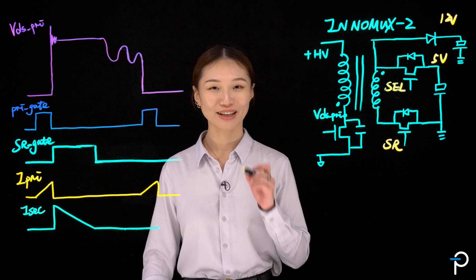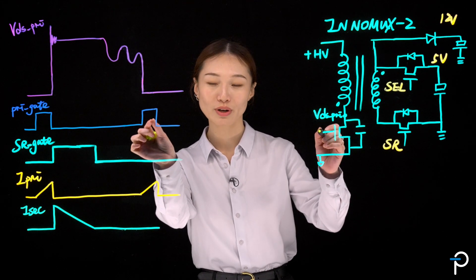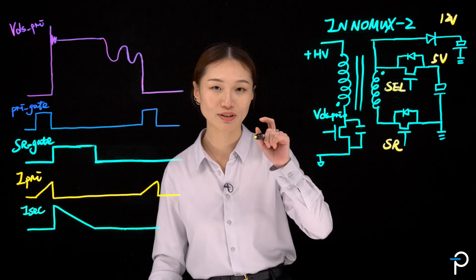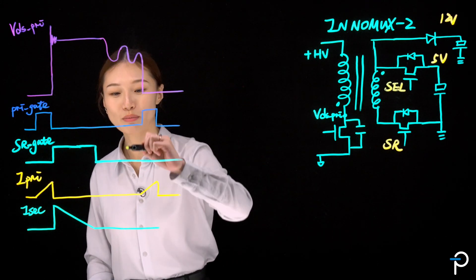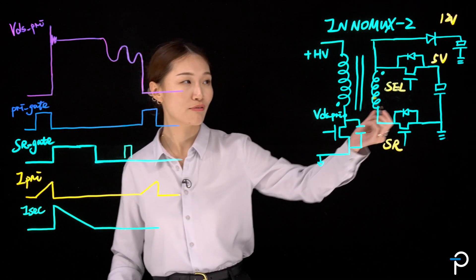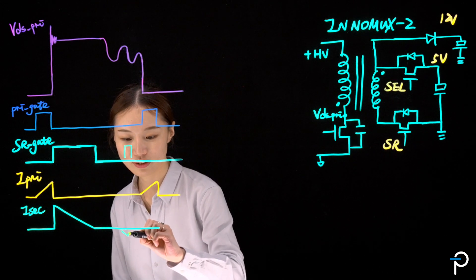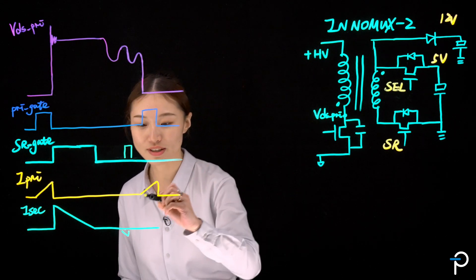On the waveforms, it'll look like this. So before turning on the primary switch, we need to turn on the SR for a small period of time. It'll be somewhere over here. That's going to cause a reverse current on the secondary side first, and then a reverse current on the primary side.